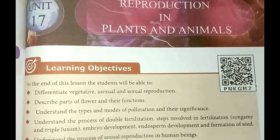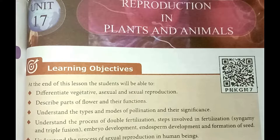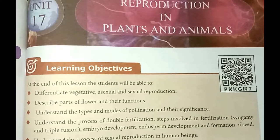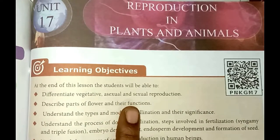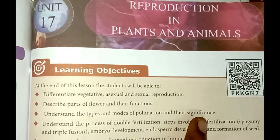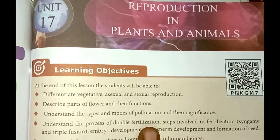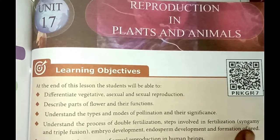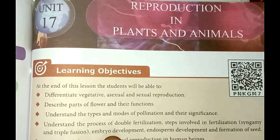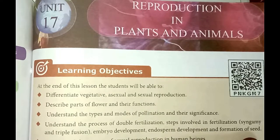In this lesson, what are we going to learn? The learning objectives are: you will learn to differentiate vegetative, asexual and sexual reproduction; describe the parts of a flower and their functions; understand the different types and modes of pollination and their significance; and understand the process of double fertilization — including syngamy and triple fusion — embryo development, endosperm development, and formation of the seed.